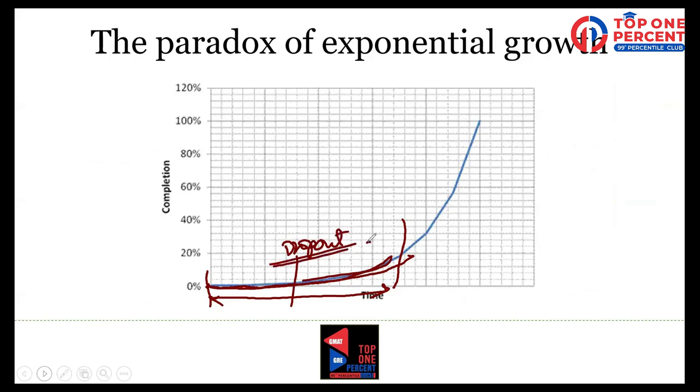So many students struggle with one topic - quant or RC or SC or CR, particularly with CR. They just don't see any result in the beginning. They really struggle with 40%, 30%, 50%, 60%, and suddenly someday a breakthrough point comes and it goes to 100%. But we don't want to wait for that time. Critical reasoning by its very nature, if you are not good at CR from the very beginning, it is a tough topic to master.